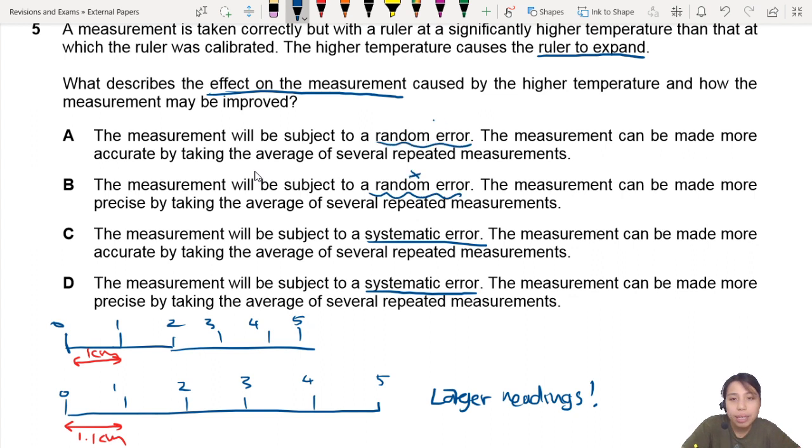Random, wrong. Random, wrong. So A and B are out. Then, how do you improve the reading? Let's look at the choices. C. The measurement can be made accurate by taking average of several repeated measurements.